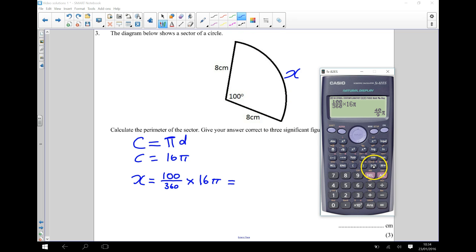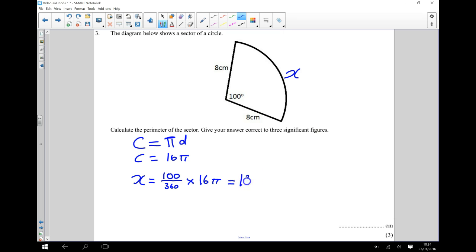And that tells me, I'll write it down. I've got 13.9626, et cetera. So let's write that down. We've got 13.9626, and then we've got some more digits after that.